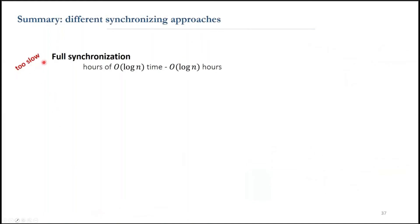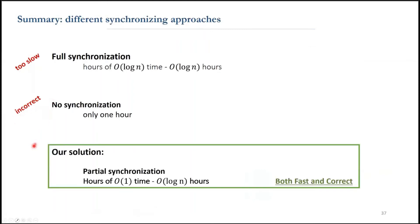To summarize what we have talked so far, with full synchronization, we get a protocol that is too slow. And without the synchronization, the protocol is incorrect. So we suggest partial synchronization, with hours that each takes constant time, but still taking log n hours, so a total of log n time. That is both fast and correct.